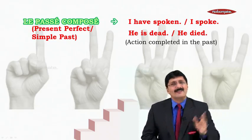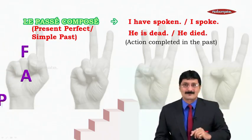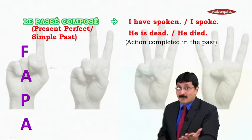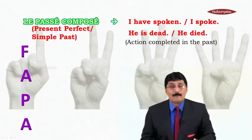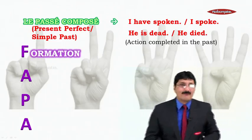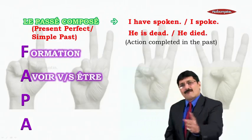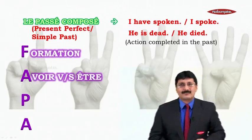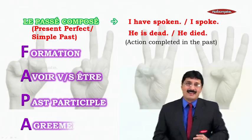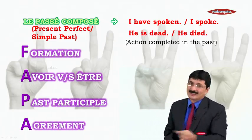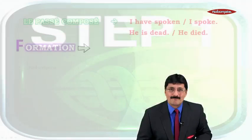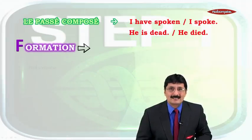Not in the recent past — that's the passé récent — and not in the distant past. The four steps are FAPA: F for Formation, A for Avoir versus Être, P for Past Participle, and A for Agreement of the past participle.